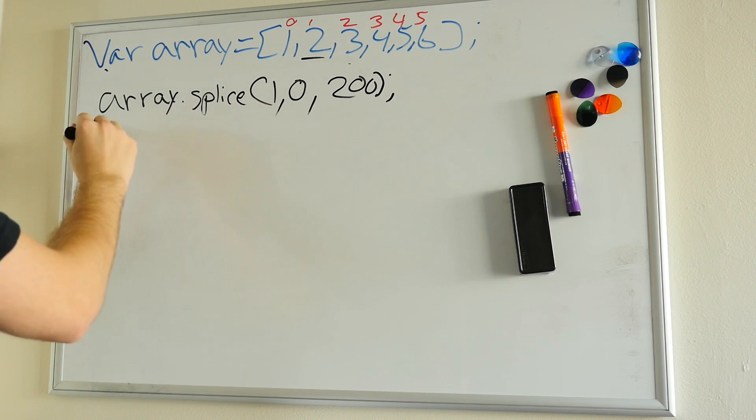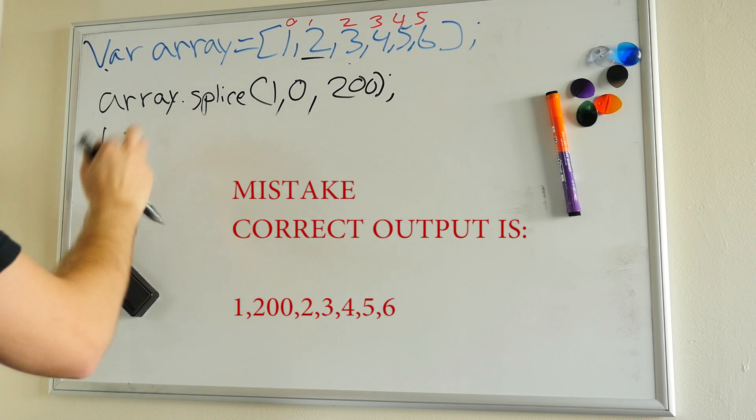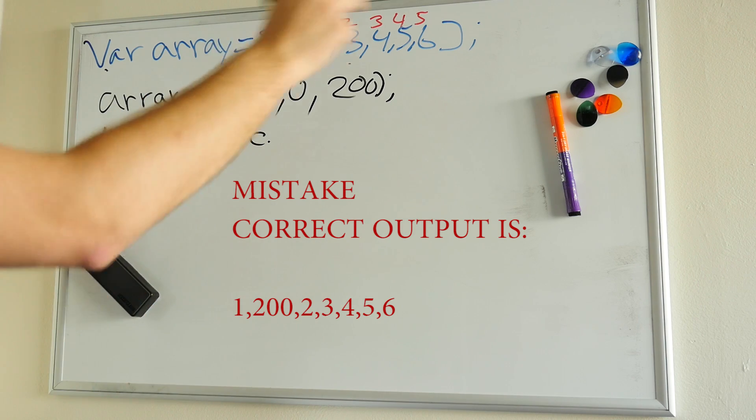So now we're going to have 1, 1, 2, excuse me, 1, 2, 200, etc. And then, you know, 3, 4, 5, 6.